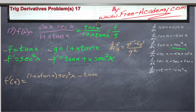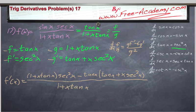times g prime, which is tangent of x plus x secant squared of x. This is all divided by 1 plus x tangent of x squared.